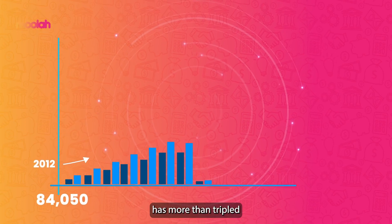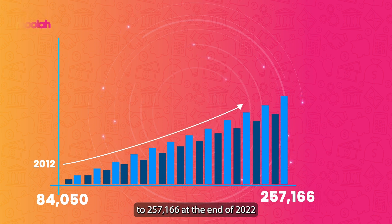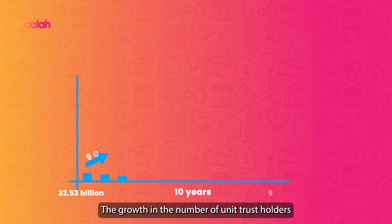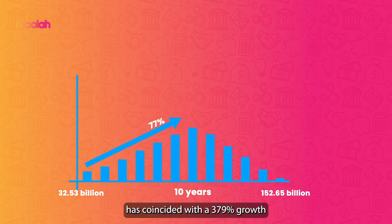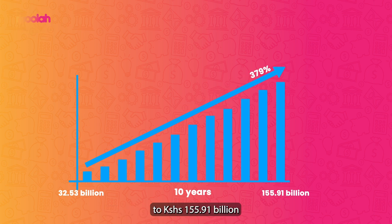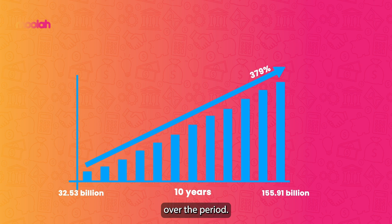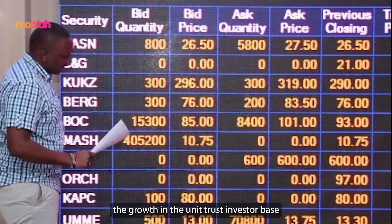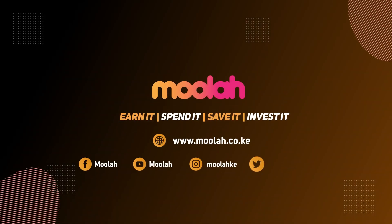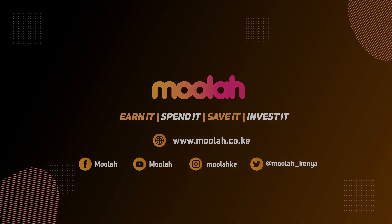According to the Capital Market Authority, the number of unit trust holders has more than tripled to 257,166 at the end of 2022 from 84,050 in September 2012. The growth in the number of unit trust holders has coincided with a 379% growth in the scheme's assets under management to 155.91 billion Kenyan shillings from 32.53 billion Kenyan shillings over the period. The regulator attributes the growth in the unit trust investor base to the preference for indirect investing through experts.